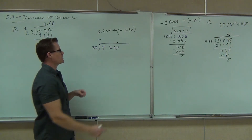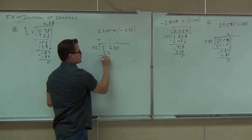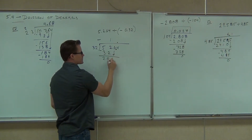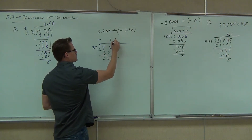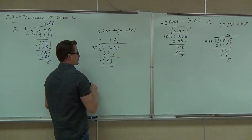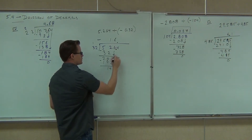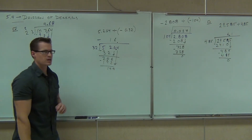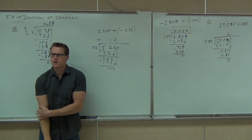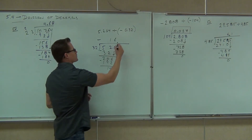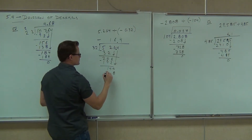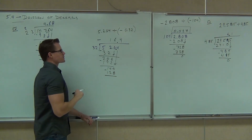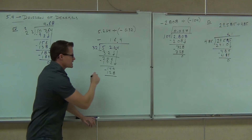32 does not go into 5, but it does go into 52 one time. So we'll make that 32. We'll subtract and get 20. We'll bring down the 6 and get 206. 32 into 206 — how much is that? 4 times. Looks like we're going to get 14. If I bring down that 4 again, we get 144. How many times does 32 go into 144? 4 times.